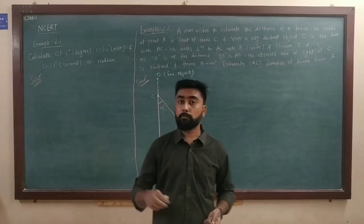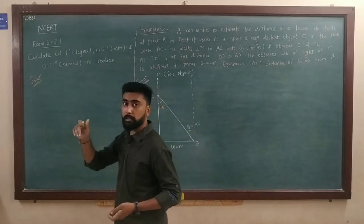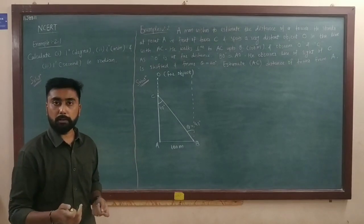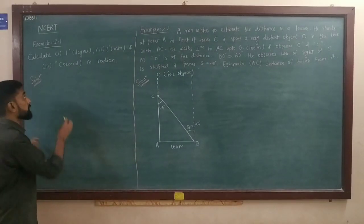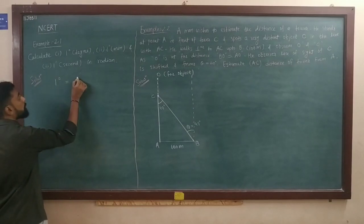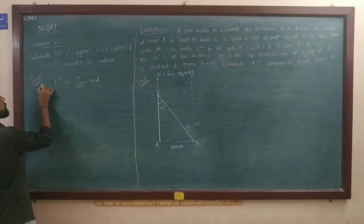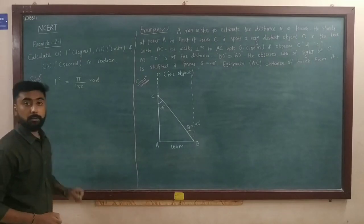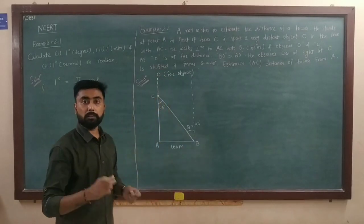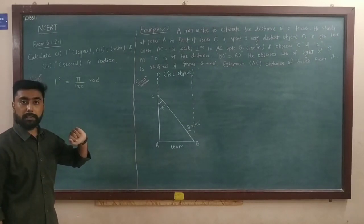Calculate 1 degree, 1 minute, and 1 second in radian. We have already done this numerical in the previous lecture when we discussed the inter-conversion between two units. Now, 1 degree is equal to pi by 180 radian.